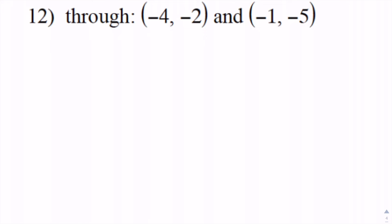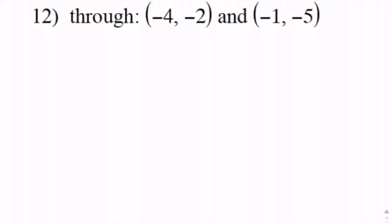I wanted to remind you of how to write the equation of a line when you're given two points. It starts off with finding the slope, and remember the slope is the difference of the y's — y2 minus y1 — divided by the difference of the x's — x2 minus x1.